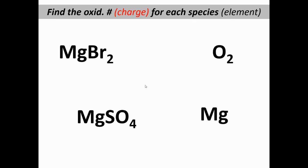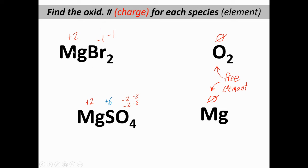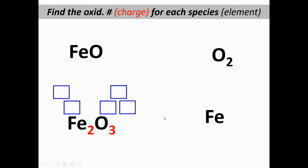Hit pause and try the next set. Magnesium is always plus two, so each of the two bromides has to be minus one — plus two, minus one, minus one adds up to zero. O₂ and Mg are both free elements. In MgSO₄, magnesium is always plus two and oxygen is almost always minus two — that's minus eight from four oxygens plus two from magnesium — so sulfur has to be plus six for the whole thing to add up to zero.